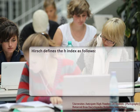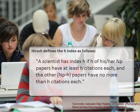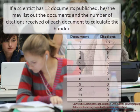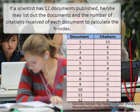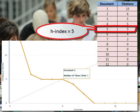Hirsch defines the H-Index as follows. If a scientist has 12 documents published, he or she may list out the documents and the number of citations received by each document to calculate the H-Index. In this case, the H-Index of this scientist is five.